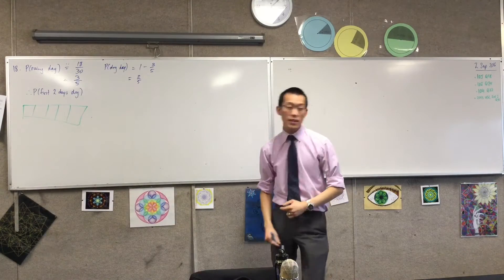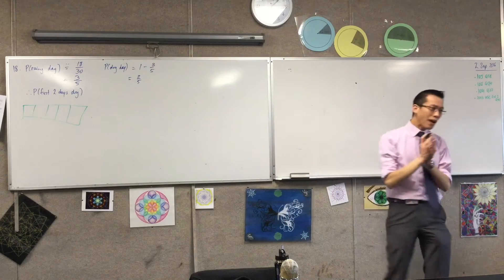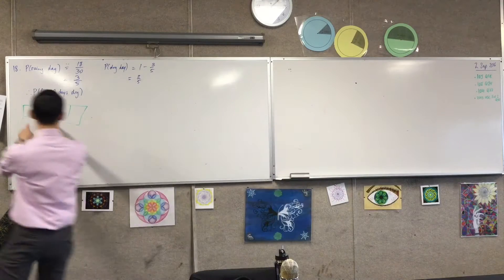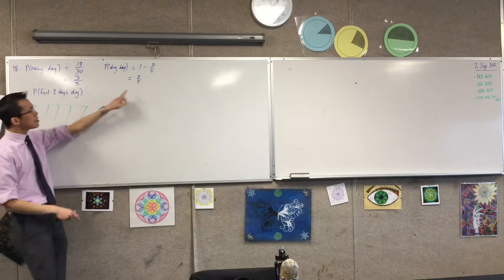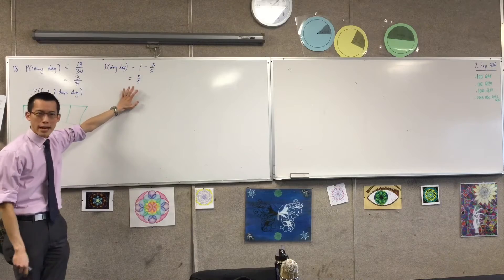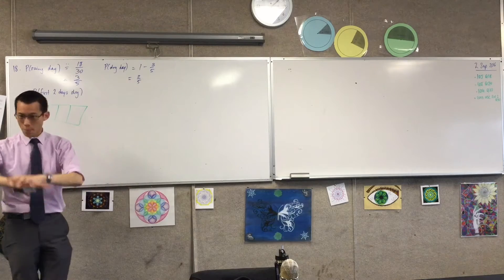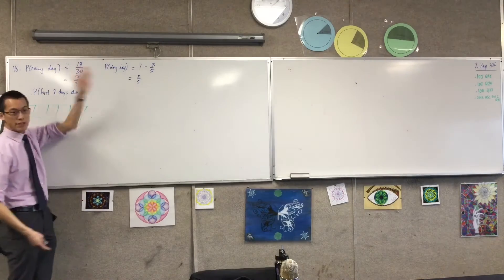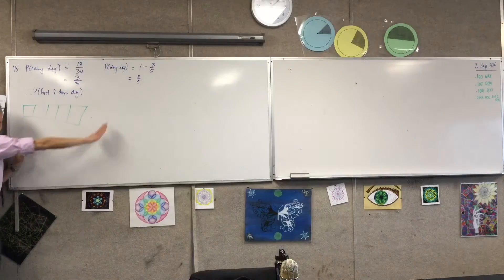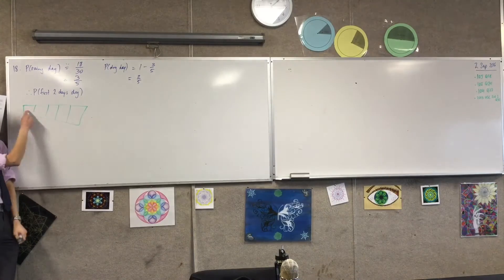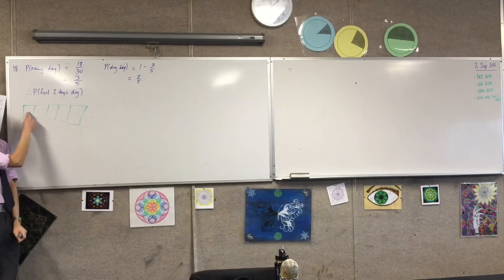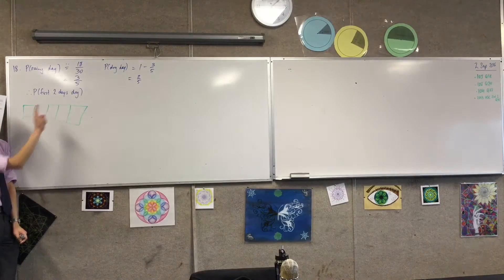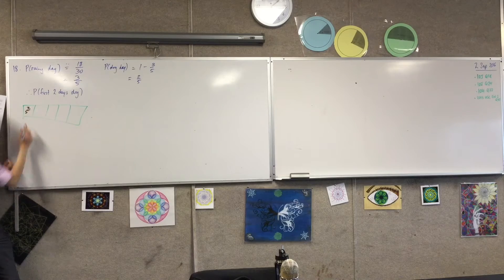So I've got 5 days here. Now I want the first 2 specifically to be dry. So on these 2 days specifically, this is the chance of getting a dry day. Now the whole idea of it being statistical is that there's no replacement or anything like that. Each day is identical. So the chance resets every single day. So if I just took away all these other days, I just said this day here. What's the probability of that day being dry? 2 out of 5.